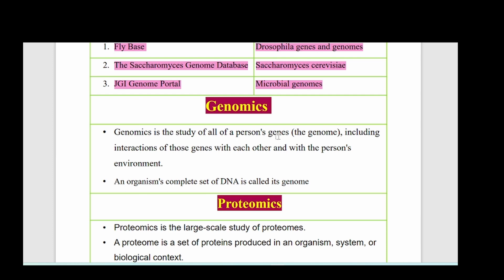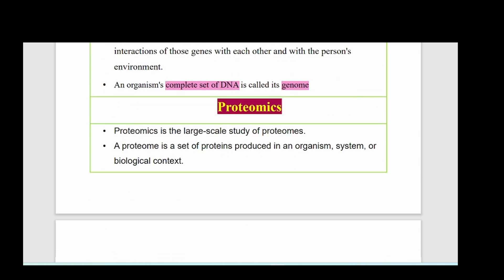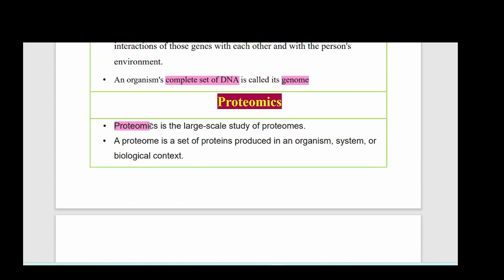Genomics is the study of all of a person's genes or genome, including interactions of those genes with each other and with the person's environment. Proteomics is the large-scale study of proteomes. A proteome is the set of proteins produced in an organism, system, and biological context.